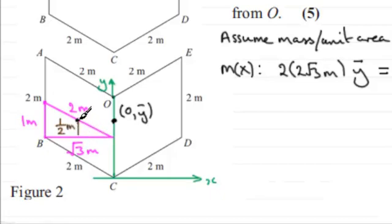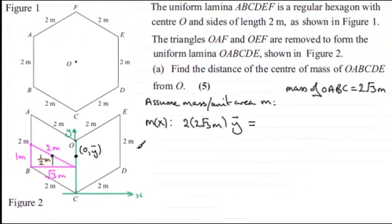So the distance of the center of mass is going to be one and a half meters above the x-axis. So we take the mass, which we worked out of OABC, which was 2 root 3 m. And we need to multiply this by the distance of the center of mass from the x-axis, which is one and a half. So I'm going to put that as 3 over 2.